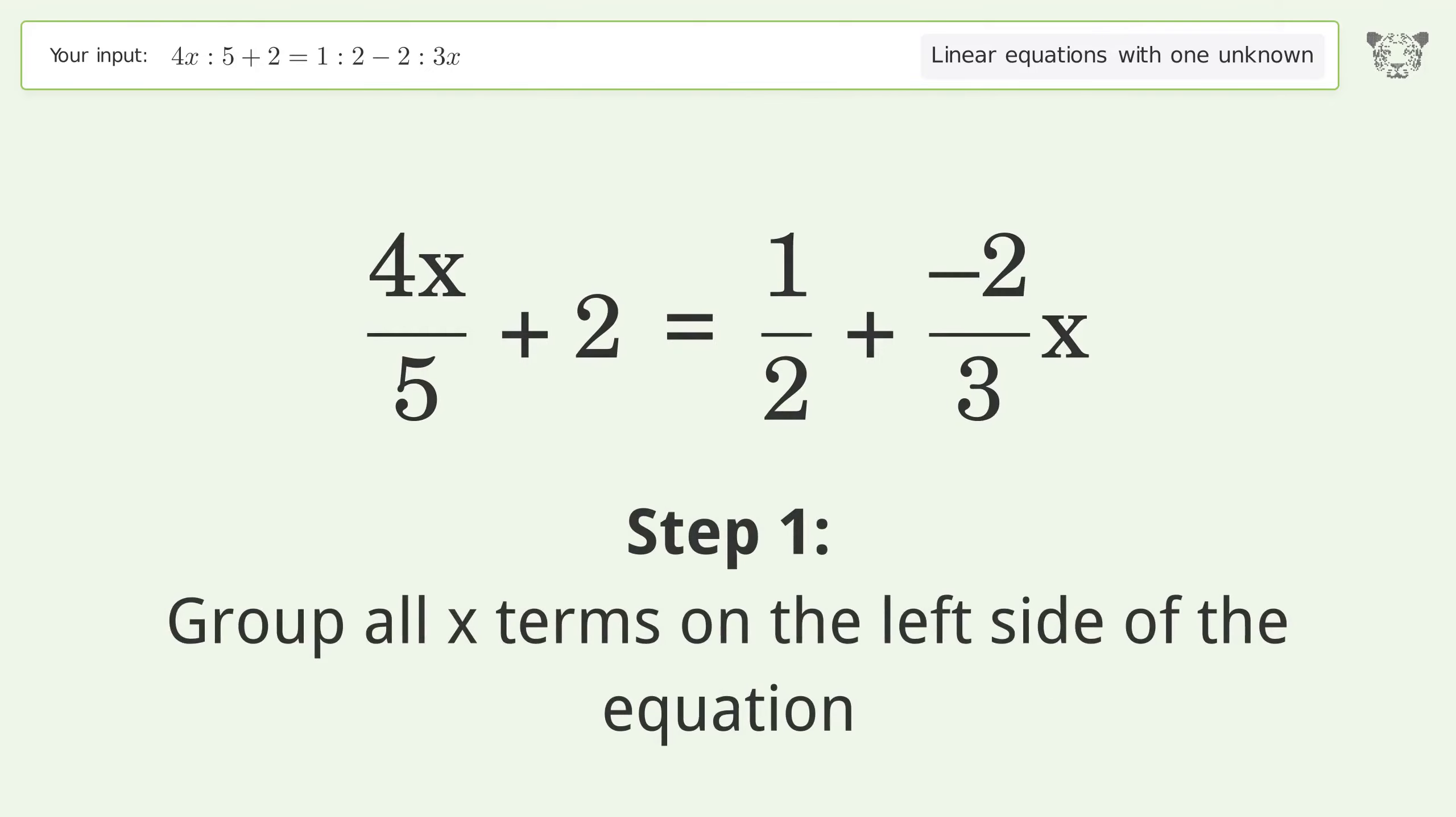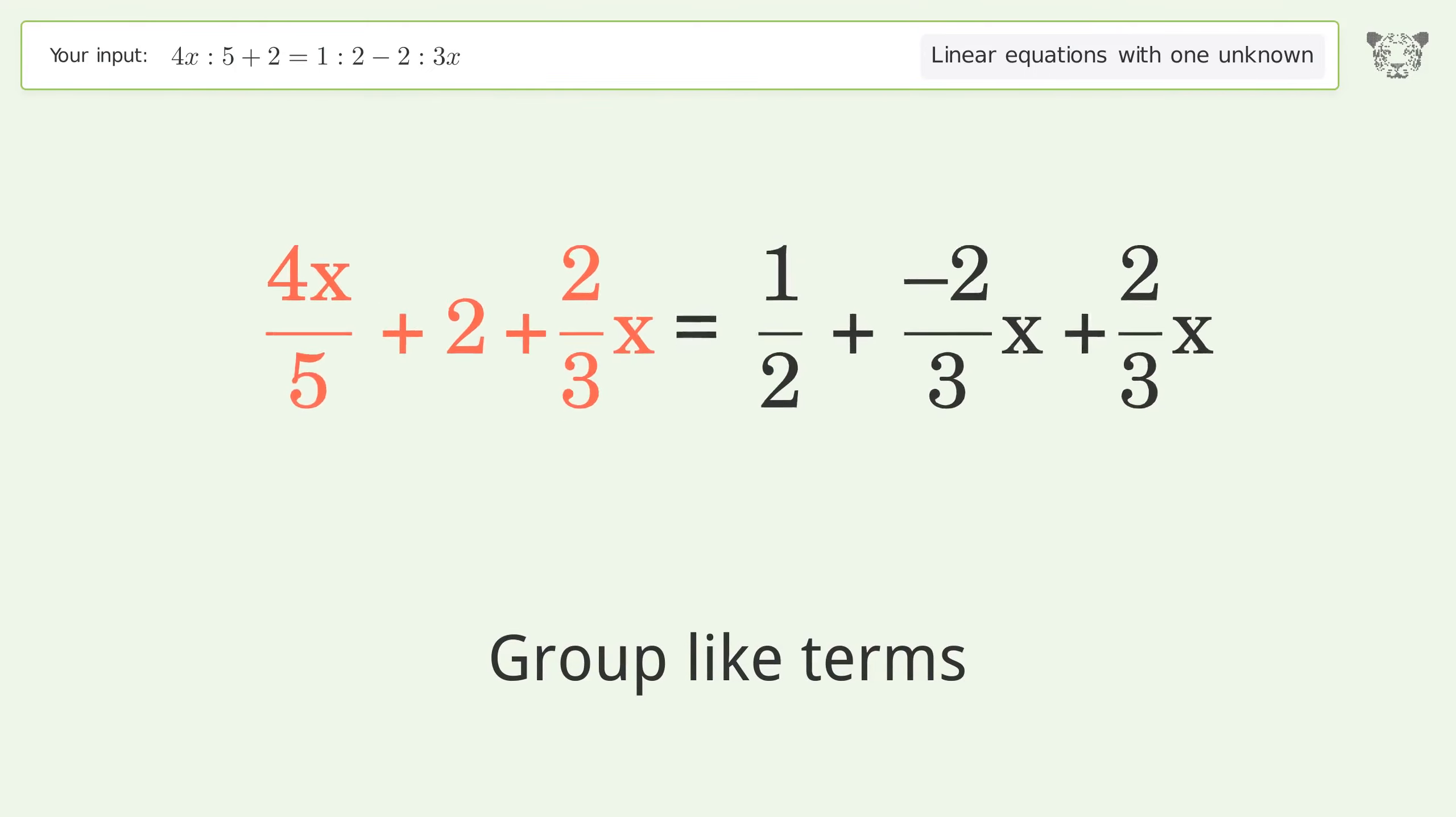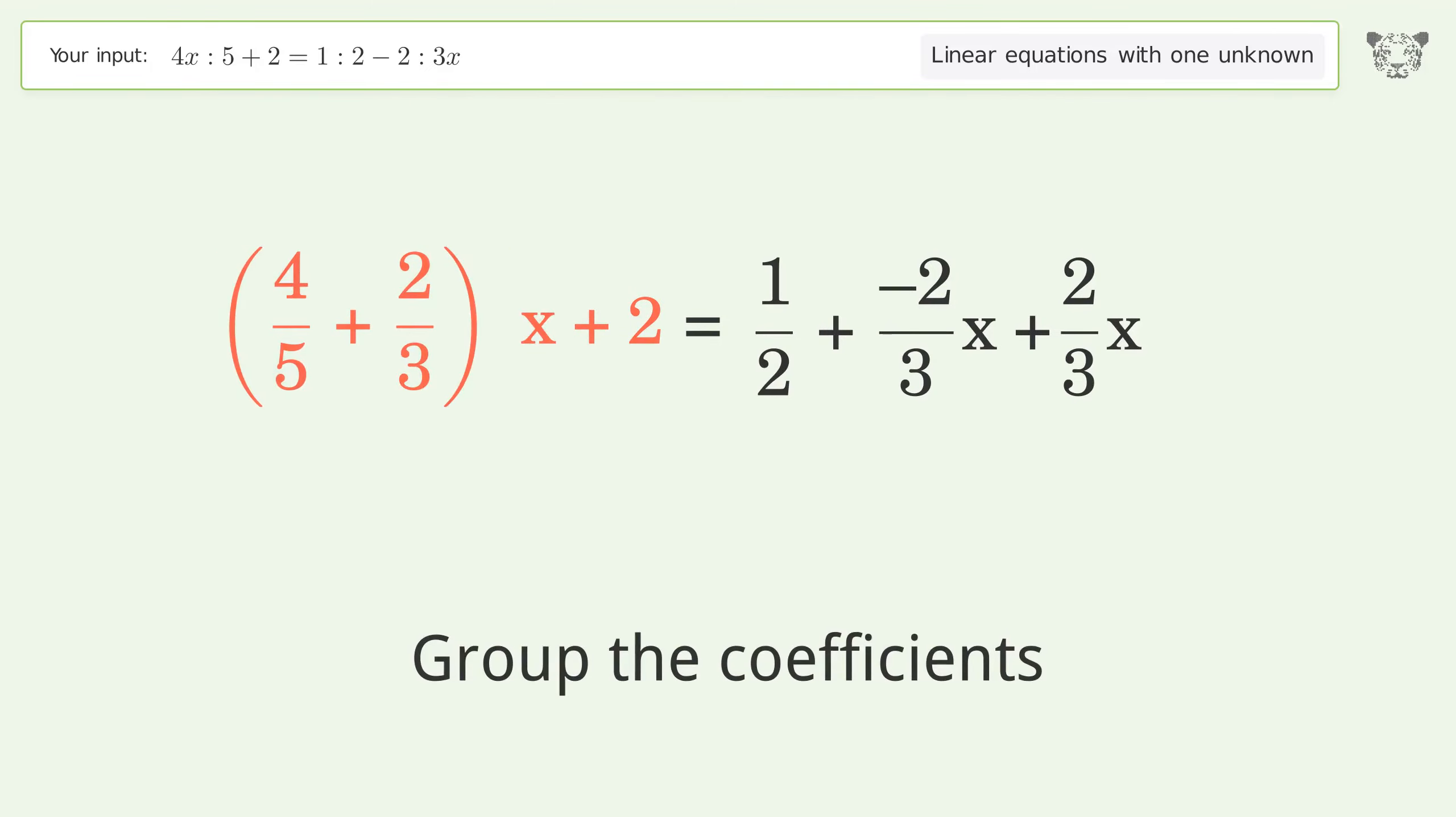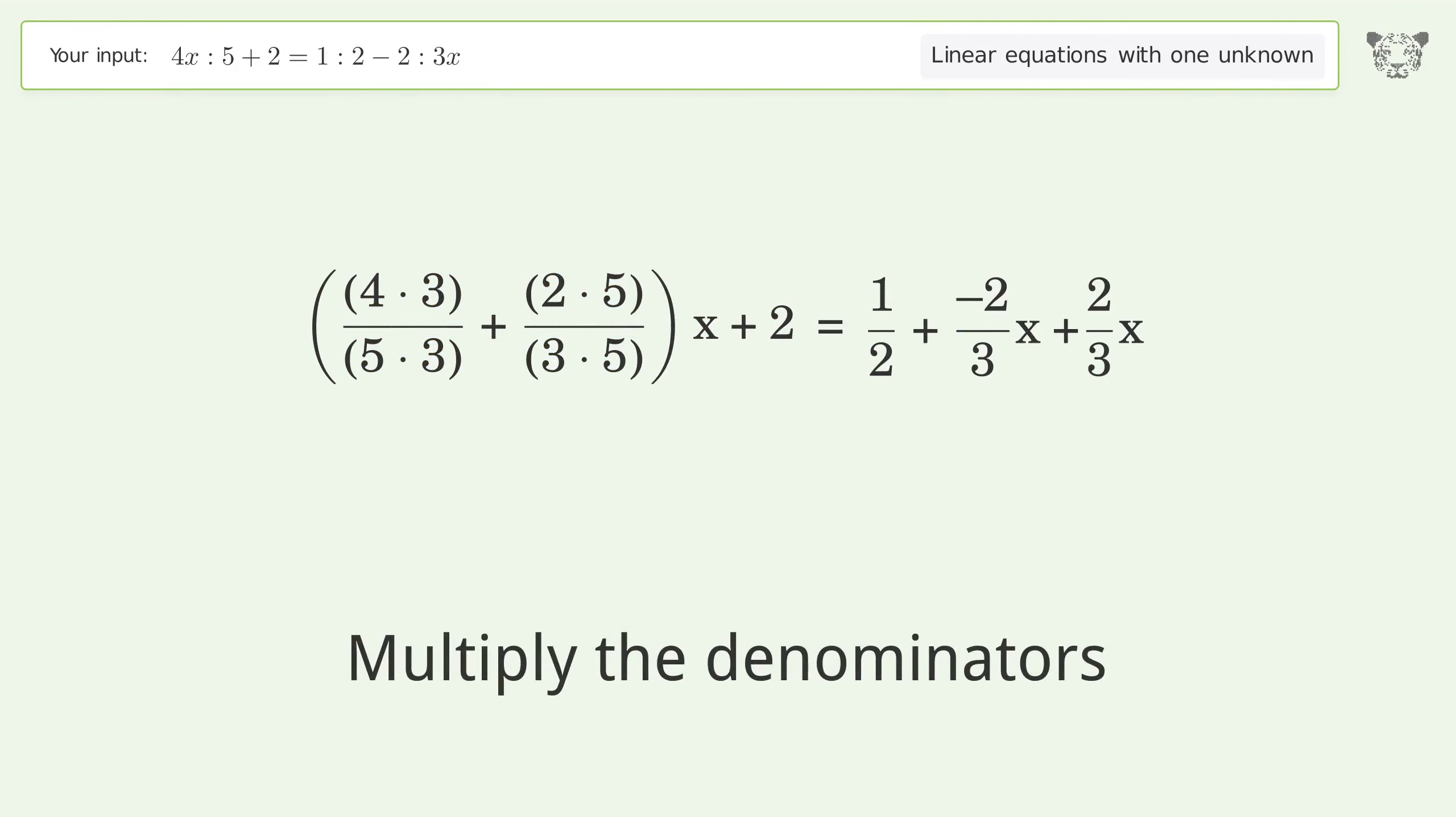Group all x terms on the left side of the equation. Add 2 over 3x to both sides. Group like terms. Group the coefficients. Find the lowest common denominator. Multiply the denominators.